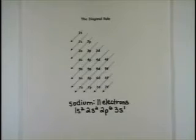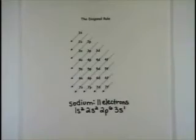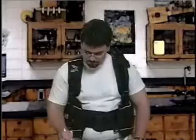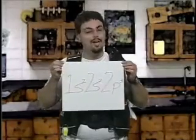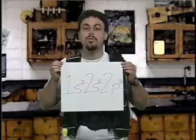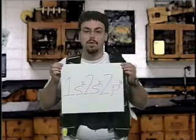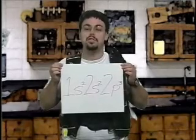When Mary checks her work, she adds the superscripts together to make sure the sum equals sodium's atomic number. Now it's your turn. The atomic number of nitrogen is 7, so write the electron distribution for nitrogen using the diagonal rule. The correct answer is 1s², 2s², 2p³. When we add the superscripts, we get 7—the number of electrons a nitrogen atom has.